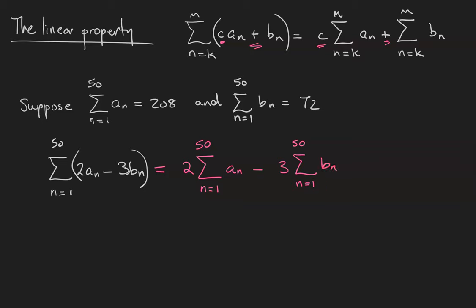Notice that the upper and lower bounds of the sums have to match for this to work. Next, we know that the sum from 1 to 50 of the a_n's is 208, and that the sum from 1 to 50 of the b_n's is 72.